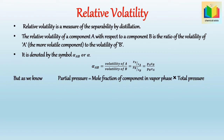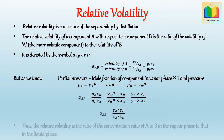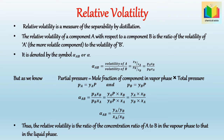Since partial pressure equals mole fraction in vapor phase multiplied by total pressure, we can write pA = yA · P and pB = yB · P. Substituting, αAB simplifies to: αAB = (yA / yB) / (xA / xB). Thus, the relative volatility is the ratio of the concentration ratio of A to B in the vapor phase to that in the liquid phase.